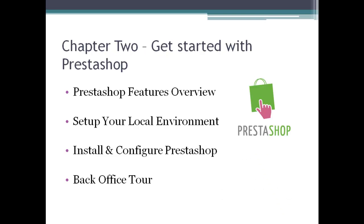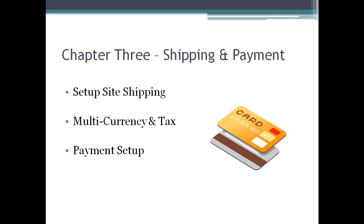Chapter two, we're going to go over PrestaShop, covering its features quite briefly, and then we're going to set up our local environment. That'll include installing XAMPP web server onto a Windows PC. XAMPP allows us to run a hosted environment — an Apache server on our local machine as well as MySQL — so we can install PrestaShop right on our local machine without needing a hosting account. Then we'll install and configure PrestaShop, and finally do a back office tour, going over the admin area and briefly covering each section.